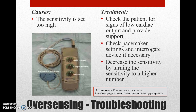Troubleshooting oversensing issues includes determining the cause — maybe the sensitivity is set too high. Treatment includes checking the patient for signs of low cardiac output and providing support. Check the pacemaker settings and call a manufacturer's representative to interrogate the device if necessary. Decrease the sensitivity by turning the sensitivity to a higher number — 20 is much less sensitive than 0.5.